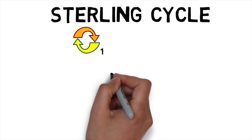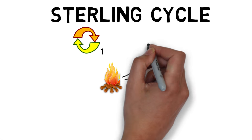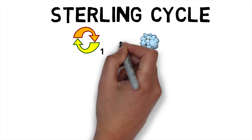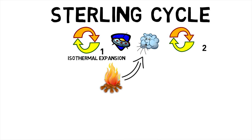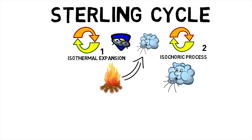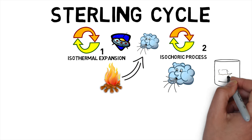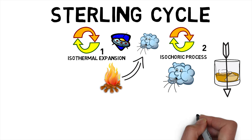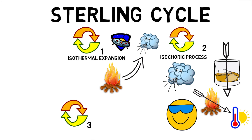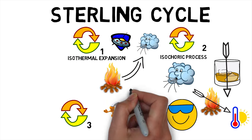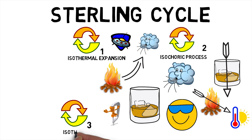The Stirling cycle has four main processes. In process 1, the expansion cycle is heated externally and the gas undergoes isothermal expansion. Process 2 is an isochoric process wherein air is passed through the regenerator, thus cooling the gas and transferring heat to the regenerator for use in the next cycle. In process 3, the compression space is intercooled, so the gas undergoes near isothermal compression.